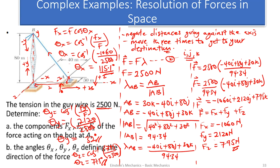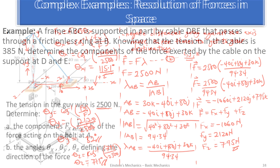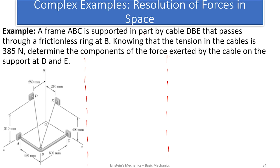Now let's tackle Example 2. A frame ABC is supported in part by cable DBE, which passes through a frictionless ring at B. Knowing that the tension in the cable is 385 Newtons, determine the components of the force exerted by the cable on the supports at D and E. We will resolve each cable segment — DB and EB — individually along the x, y, and z axes.